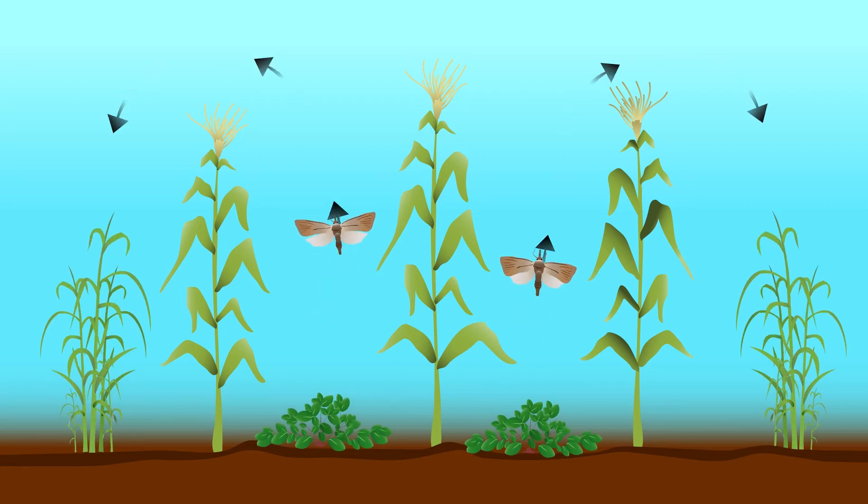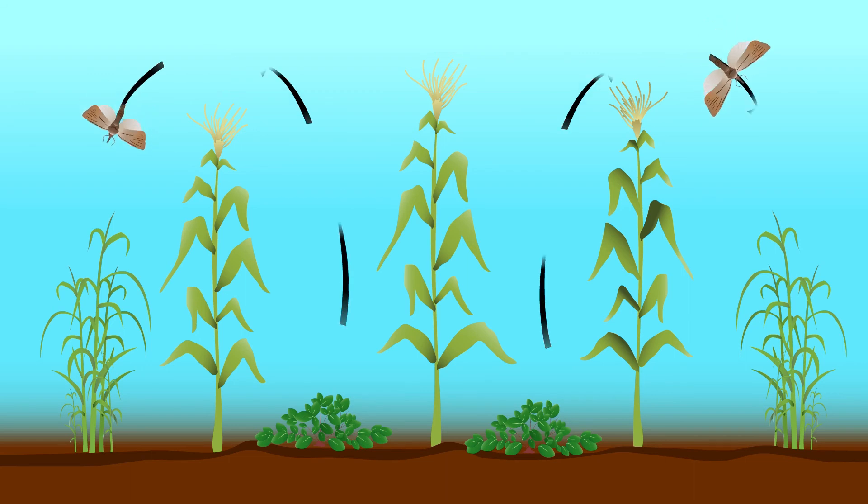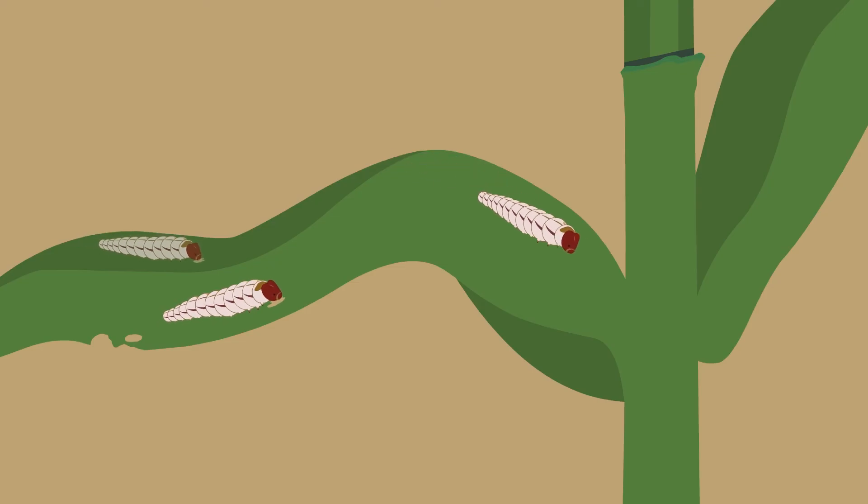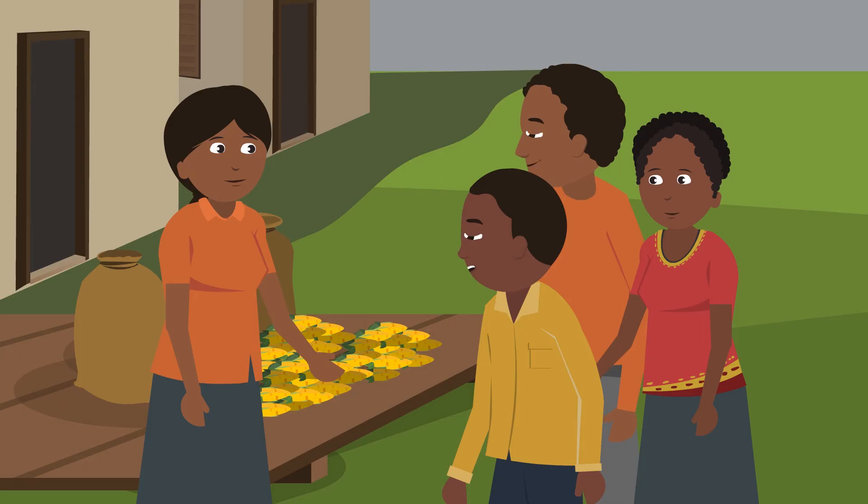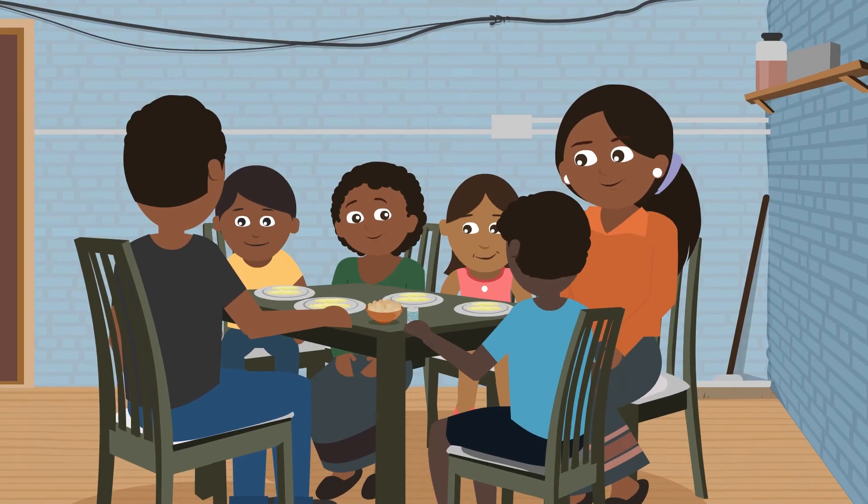In summary, this is a cheap and easy solution to control stem borers without having to buy any pesticides. Try push-pull on your maize crop if stem borers are a problem in your area. You can save your crop from infestations and produce greater yields during the growing season. This means more food and money for you and your family.